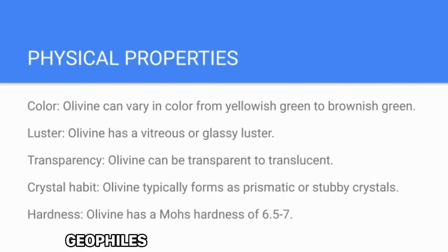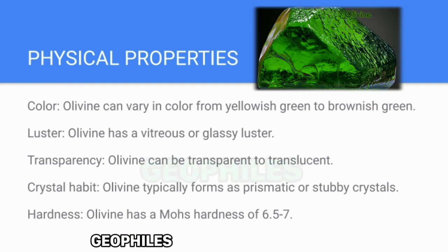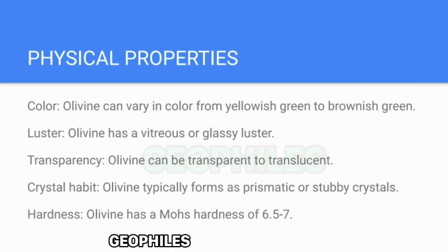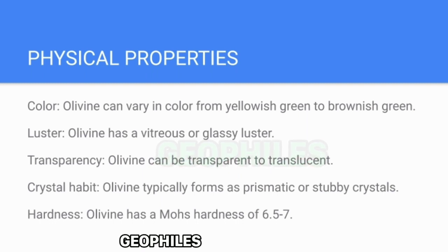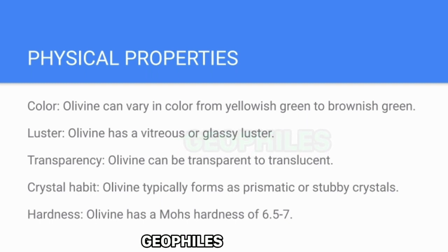Physical Properties: Olivine can vary in color from yellowish-green to brownish-green. It has a vitreous or glassy lustre and can be transparent to translucent. Olivine typically forms as prismatic or stubby crystals.